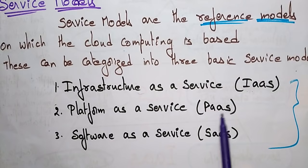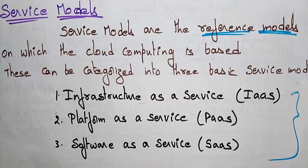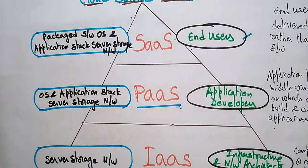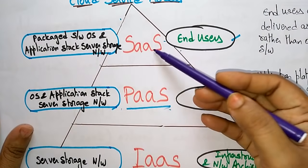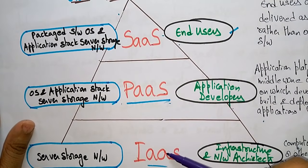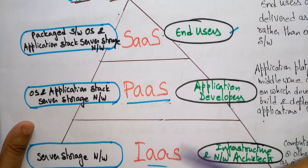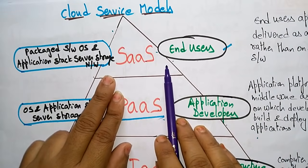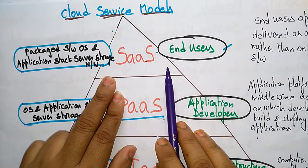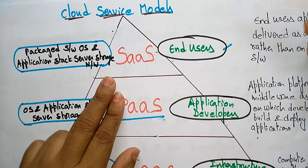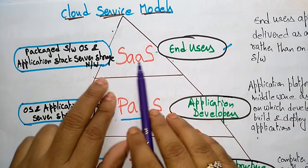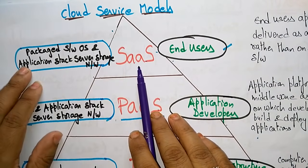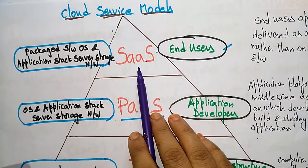Here are the cloud service models: Software as a Service, Platform as a Service, and Infrastructure as a Service. Software as a Service is accessed by end users — it is connected to end users for application delivery as a service rather than on-premises software.